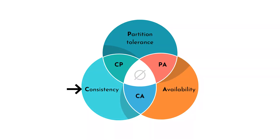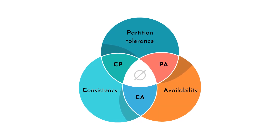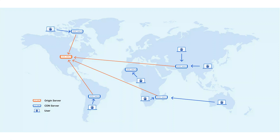CAP stands for consistency, availability, and partition tolerance. The CAP theorem states that in any distributed system, you can only guarantee two out of these three properties at the same time. You have to sacrifice one. This theorem forces software engineers to make conscious trade-offs when building large-scale distributed systems, because perfect systems that have all three simply can't exist in the real world.